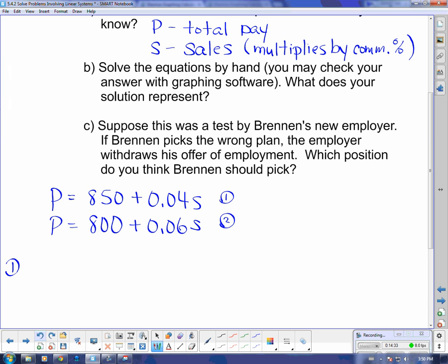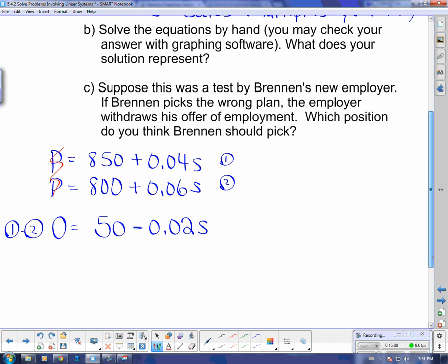If I take equation one and I subtract equation two. So I do equation one, subtract equation two. P minus P means my P's are going to go away. So the P's become zero. 850 minus 800 is 50. And then 0.04 minus 0.06 is negative 0.02S.